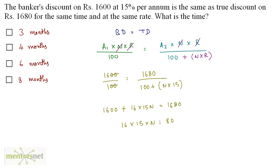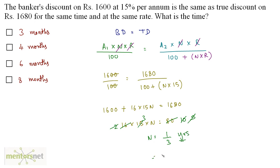So 16 times 15 times N equals 1680 minus 1600, which is 80. Cancelling: 2 times 15 times N equals 10, giving N equals 1/3 years. One third of 12 months is 4 months, so the answer is option B: 4 months.